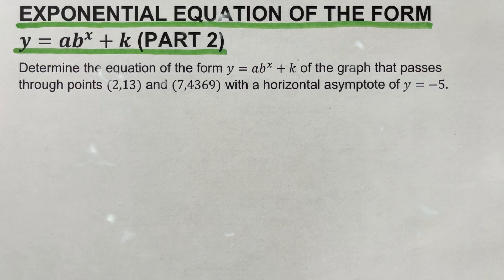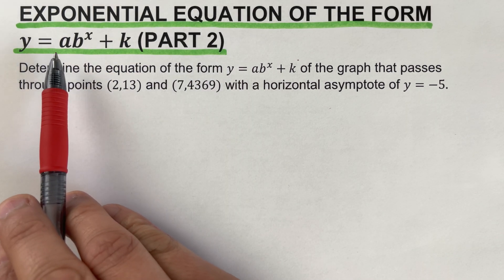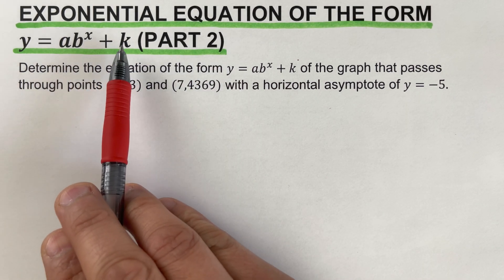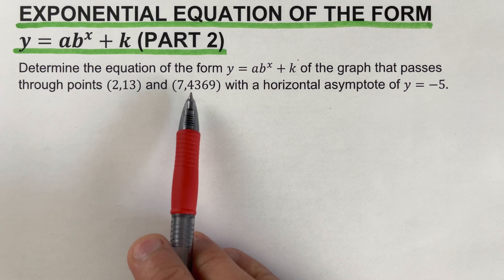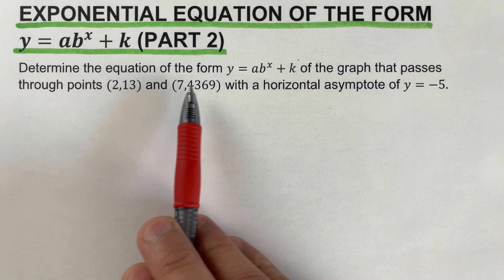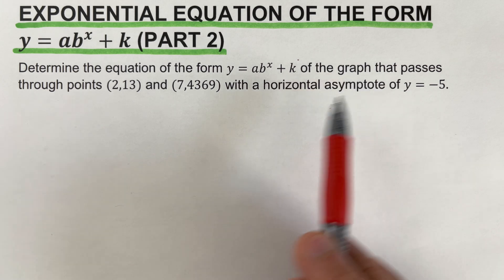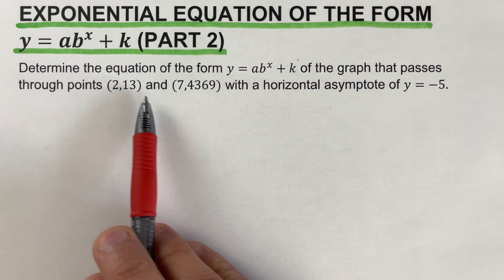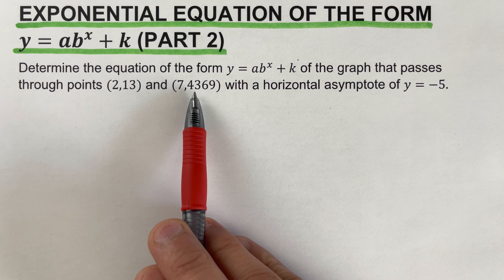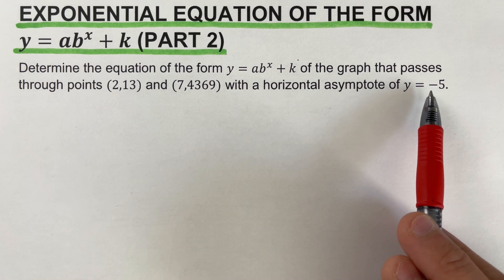In this video we will be writing an exponential equation of the form y equals a·b raised to the power x plus k, given two points. This is the second part where we use logarithms to determine the exponential equation. The example: determine the equation of the form y = a·b^x + k of the graph that passes through the points (2, 13) and (7, 4369), with a horizontal asymptote of y = negative 5.